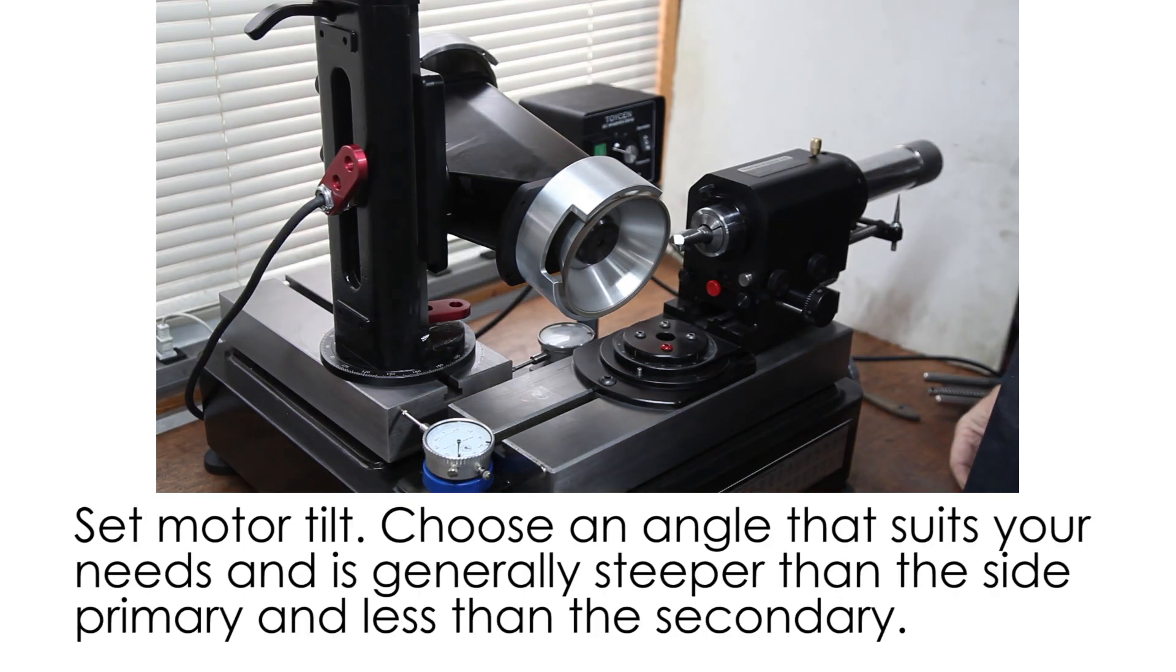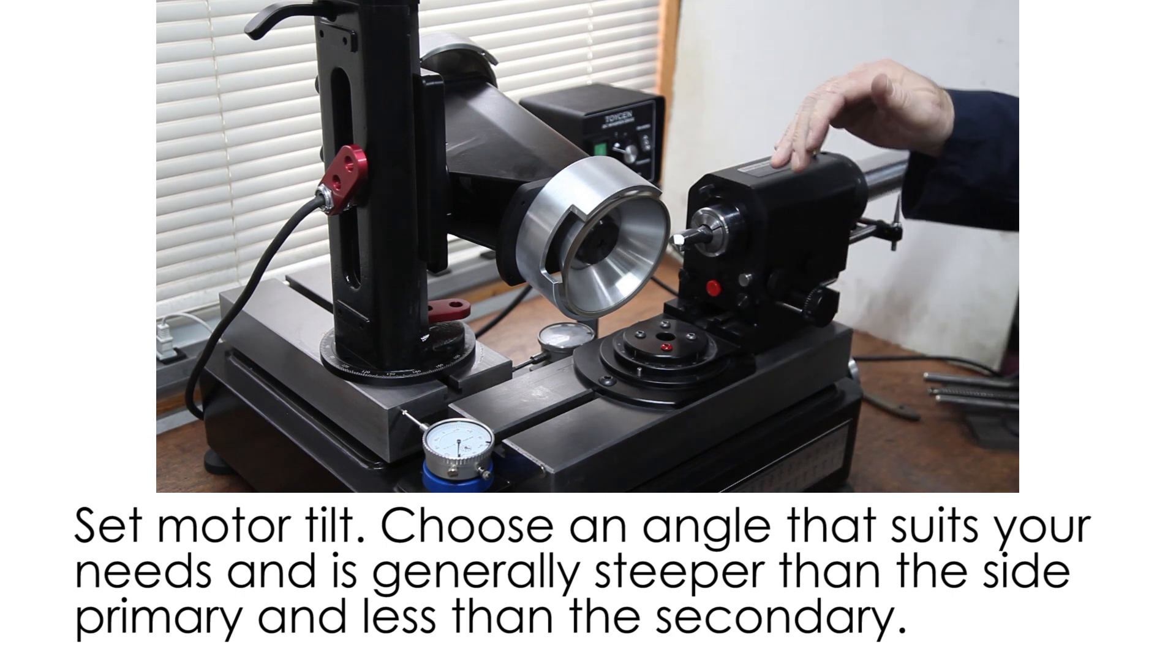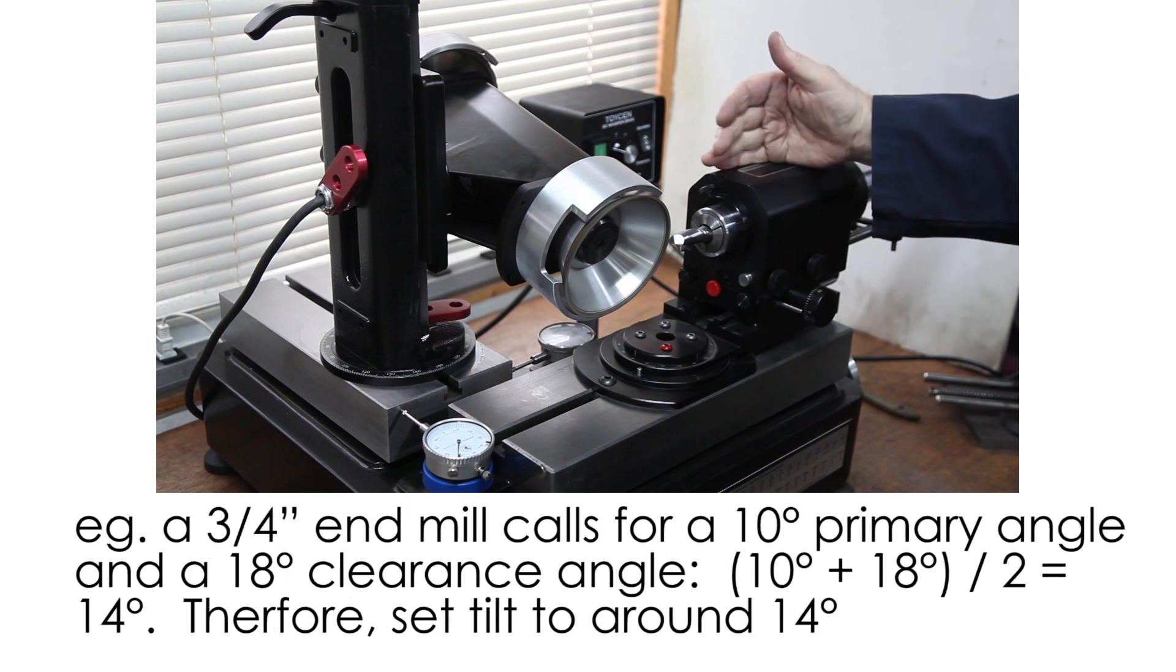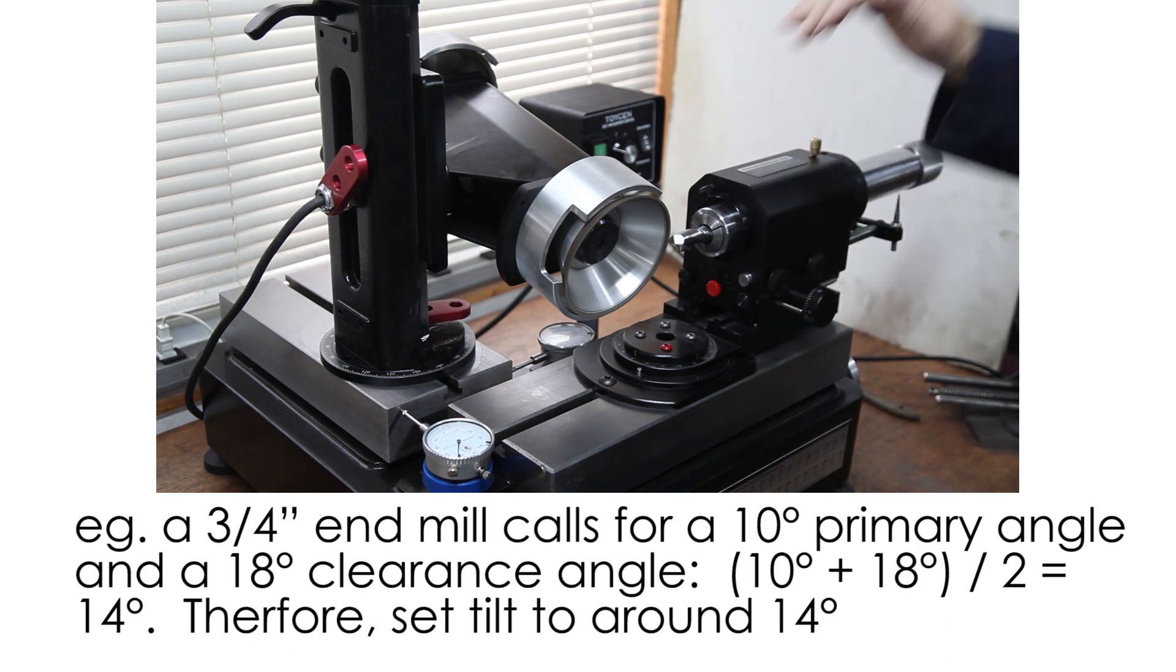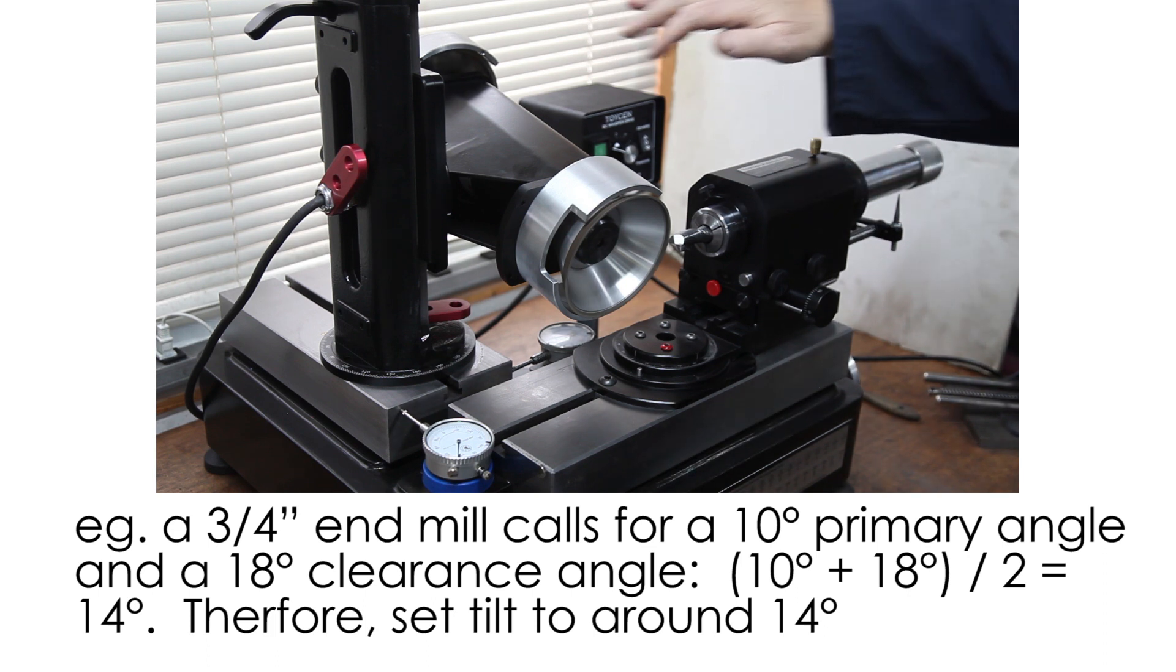To determine the motor tilt, we've taken the - you kind of want a nice blend on the end and you want a little bit steeper primary on the side, so it's 3D. This is a three-quarter inch end mill, so the primary is 9 degrees and secondary on the side is 18 degrees. The end of the tool in this case is probably just below 20 degrees, so we took the primary and the secondary and divided it by 2, and in this case would be about 13 or 14 degrees, and that's where the motor is set at that height.